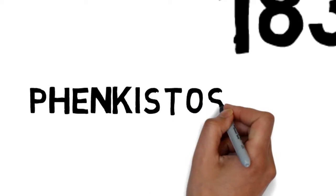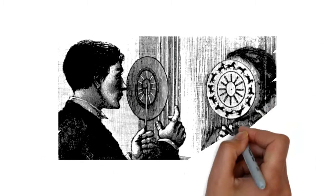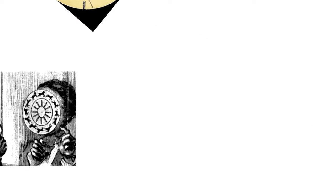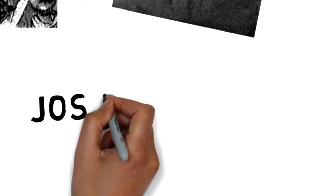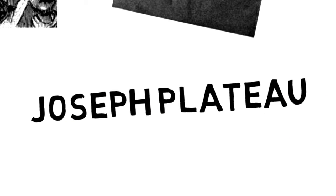In 1833, the phenakistoscope was the first widespread animation device that created a fluent illusion of motion. By holding the picture side up to a mirror, spinning the disc and looking through the slots, the images create the illusion of a moving picture. It was created by Joseph Plateau.